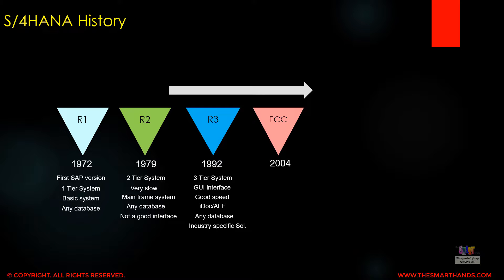In 2004 SAP released their next version known as SAP ECC, which was again a 3-tier system. They also launched add-on modules like CRM, SRM and APO. OOPS ABAP was also developed with this system and a web-based interface was launched as well.